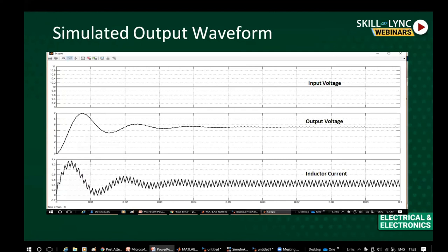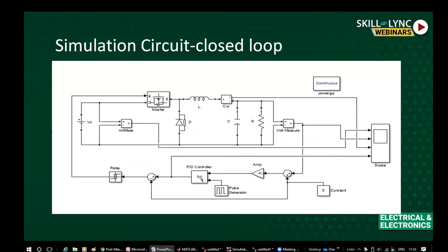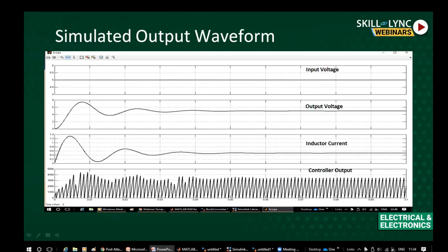This simulation was done in open-loop, meaning if the load or input voltage changes, the output voltage will also change and not remain at the desired value. For closed-loop simulation, take the output voltage, compare it with a reference, use a PID controller, and use a relay to generate gate pulses for the MOSFET. With closed-loop control, even if input voltage or output load changes, the output voltage will remain at the desired value.